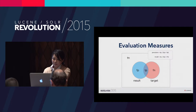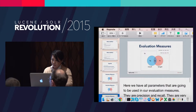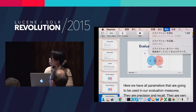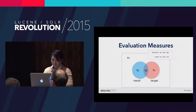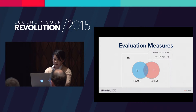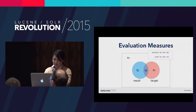Precision and recall are very popular measures. For example, if a search engine returns 100 documents but you find only three documents that satisfy your expectation, then the precision is 3%. For example, when you execute a search expecting 10 documents but the search engine returns only three documents, the recall is 30%. Now we have our evaluation measures.